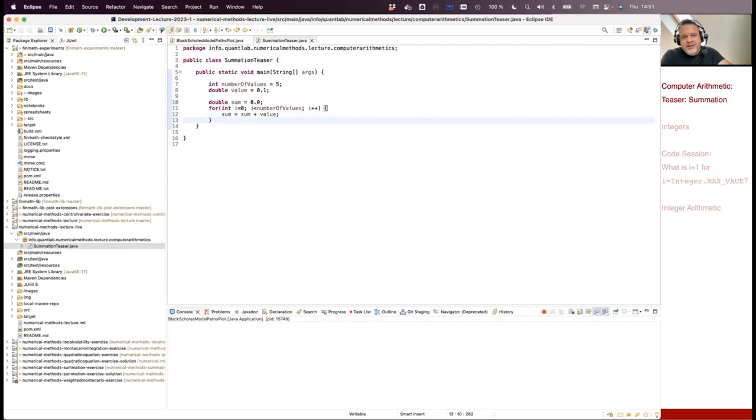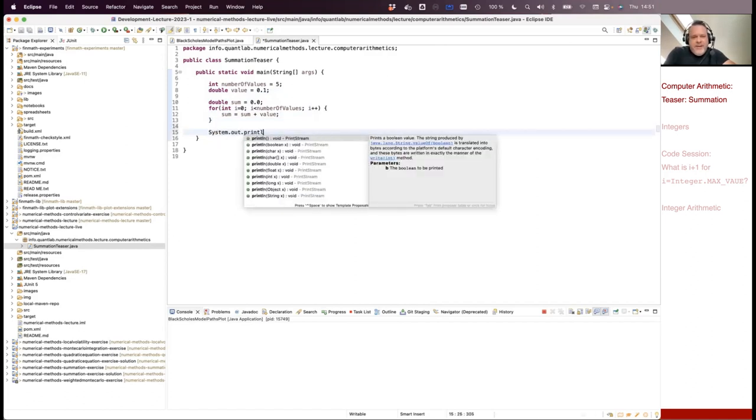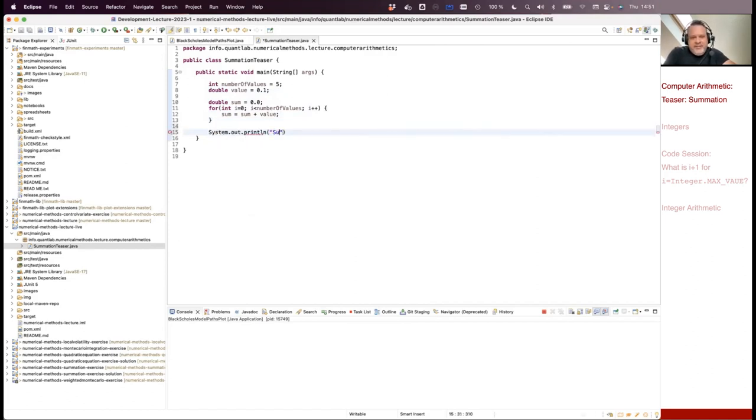So initialize the sum to 0 and say sum is sum plus value. So what do we get? So if we add five times 0.1, we get 0.5. So maybe I just print the sum. So I get 0.5.